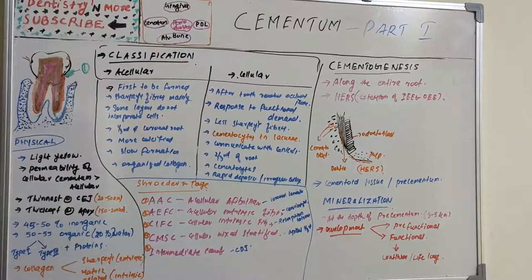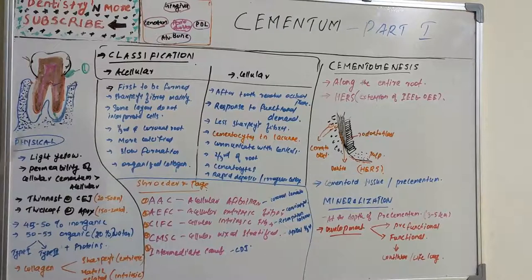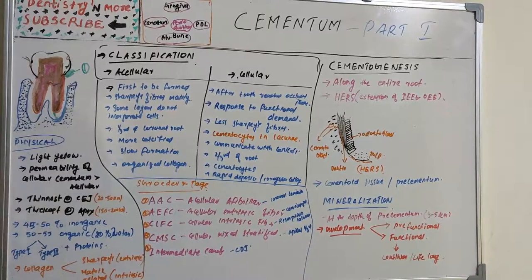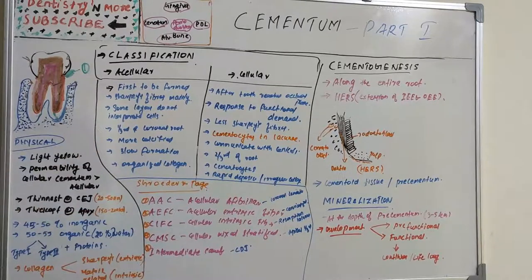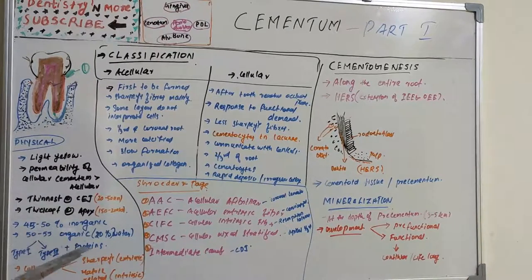Regarding composition on a dry weight basis: 45 to 50% inorganic substances, consisting of calcium and phosphorus in the form of hydroxyapatite crystals, and 50 to 55% organic material and water. The organic matrix of cementum consists of type 1 collagen, type 3 collagen, and other non-collagenous proteins, with type 1 collagen being the majority — just like the periodontal ligament.